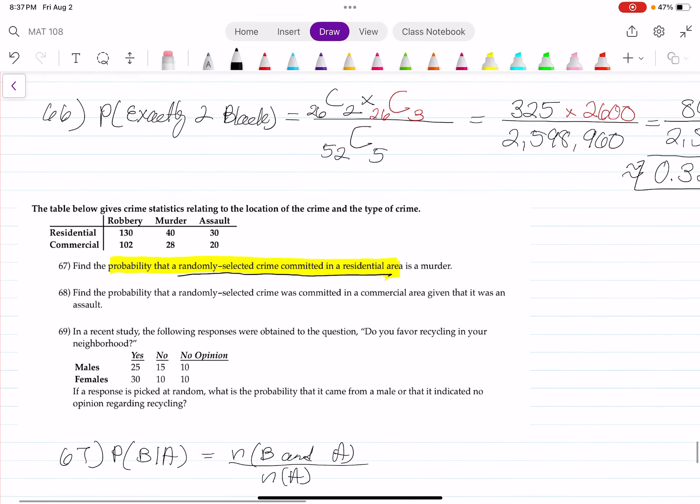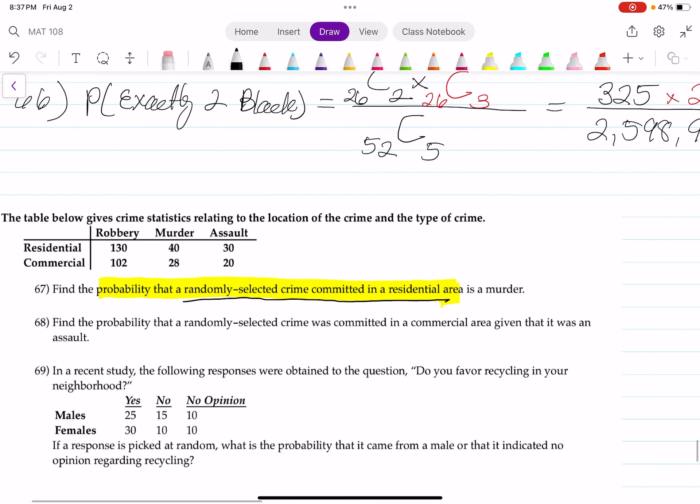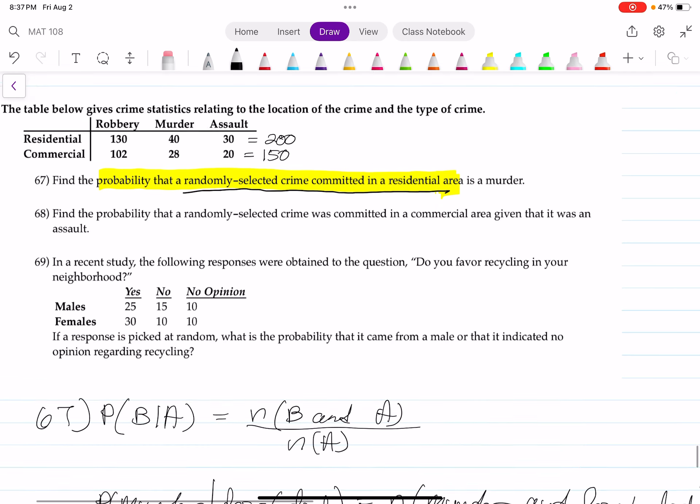So based on this table, let's add up the numbers. So that's going to be 130 plus 40 is 170 plus 30 is 200. This is going to be 102 plus 28 is 130 plus 20 is 150. So there are a total of 200 crimes in a residential area.